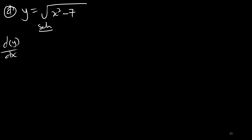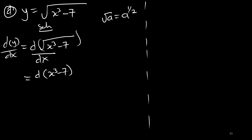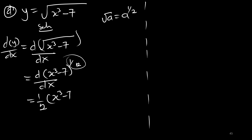We apply the derivative. The square root of x cubed minus 7 is the same as x cubed minus 7 raised to the power of one half. To solve this we use the chain rule: multiply the power by the function and reduce the exponent by 1, giving a power of negative one half.